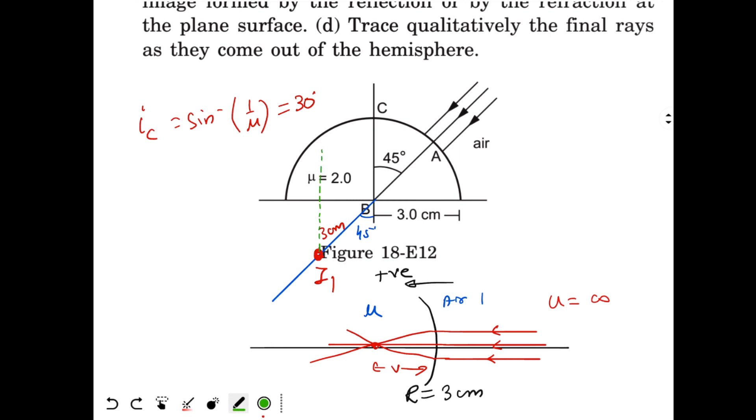The image will be created over here. This is the image I₂ created after reflection by the plane surface. This is 3 cm, this is 3 cm. So this is the image I₂ after reflection.